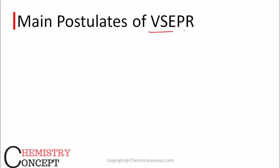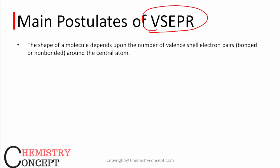VSEPR theory — valence shell electron pair repulsion theory. The first postulate is that the shape of a molecule depends on the number of valence shell electron pairs present in an atom. As the name suggests, the theory says the geometry of a molecule will depend on its valence shell electrons. For example, if I talk about ammonia, nitrogen has a total of 5 electrons. Three electrons are used to form 3 bonds with hydrogen atoms and 1 lone pair of electrons is there.